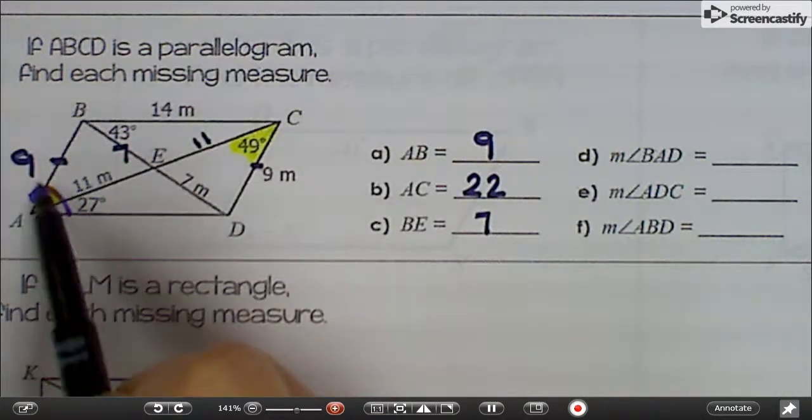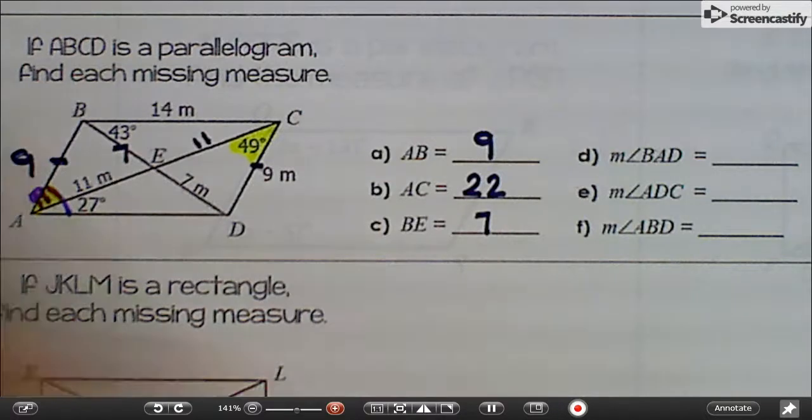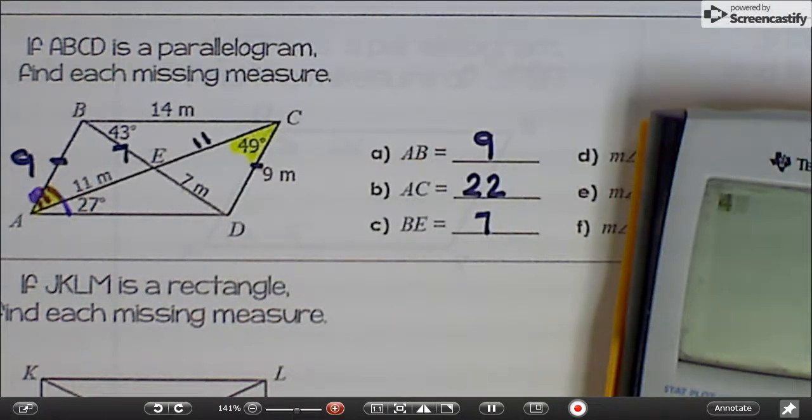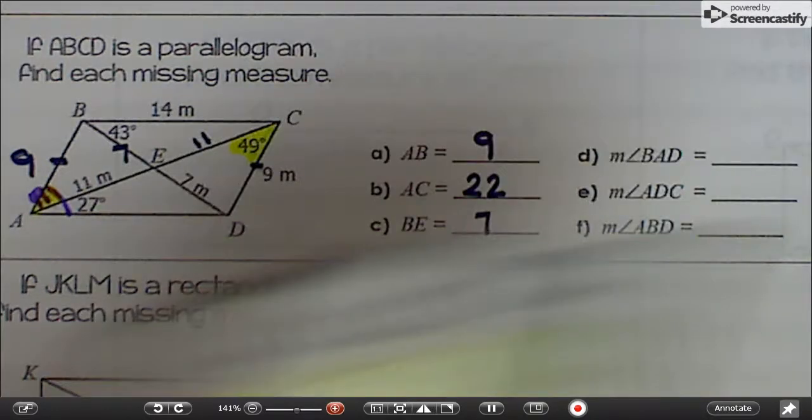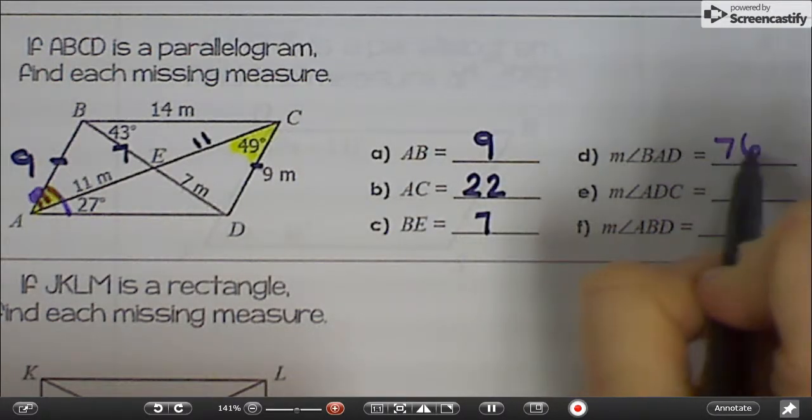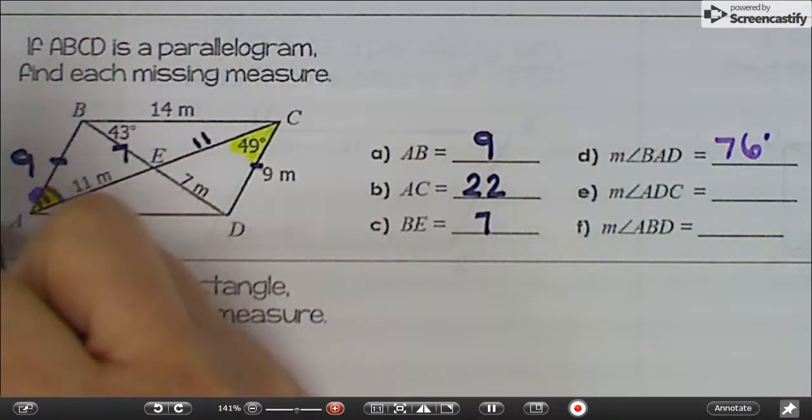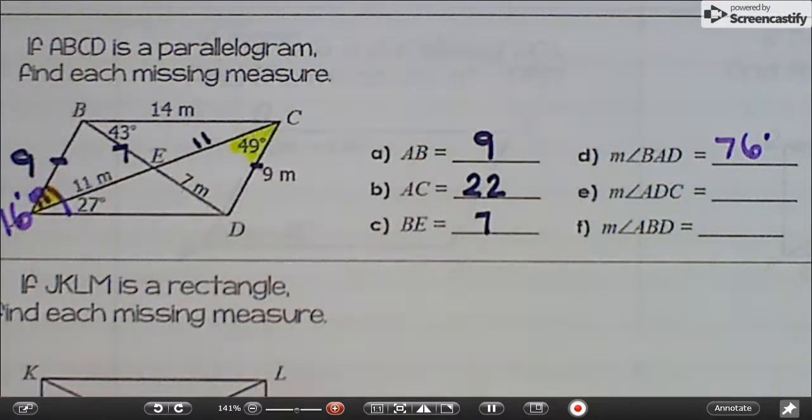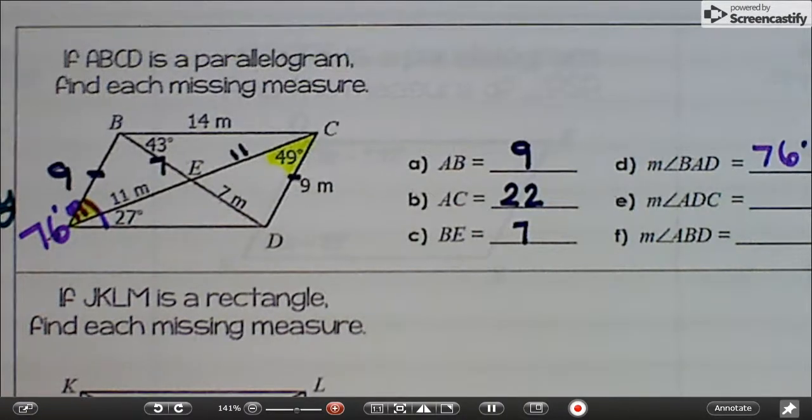So the whole angle BAD would be 49 plus 27, which equals 76 degrees. So I'm just going to write it out here just because I don't have room inside. That whole angle is 76 degrees.